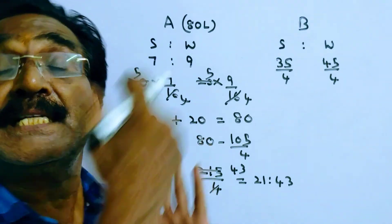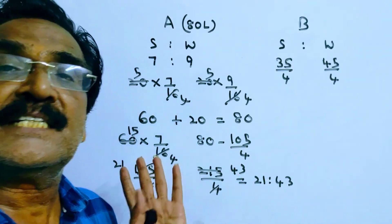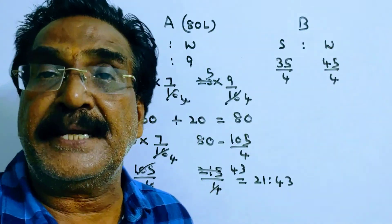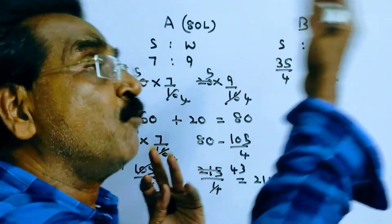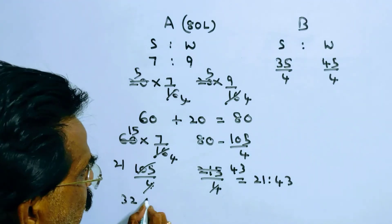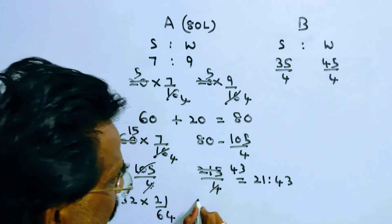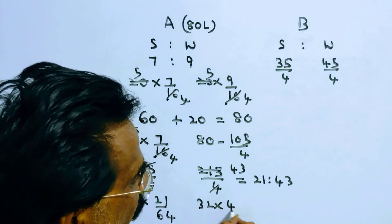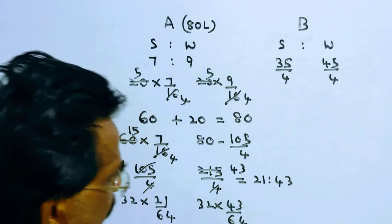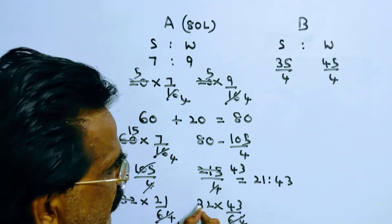Now 32 liters of mixture is again transferred to container B. How much spirit and water is transferred? 32 × 21/64 spirit and 32 × 43/64 water.